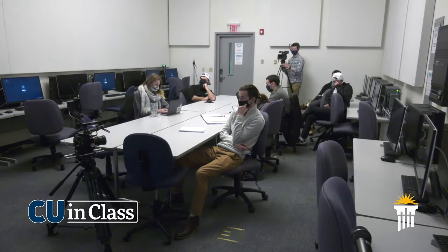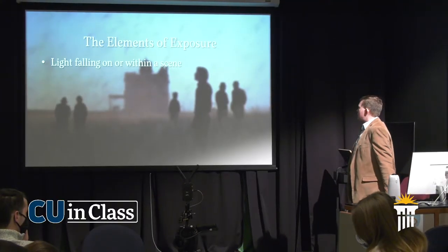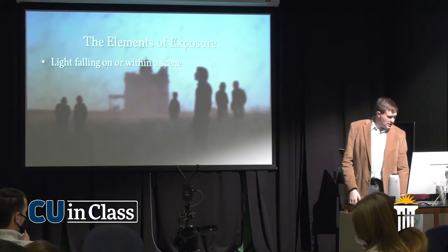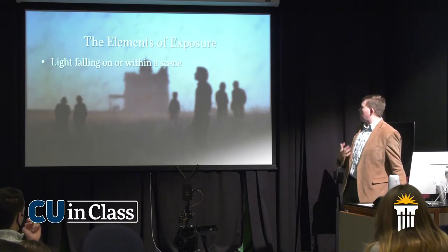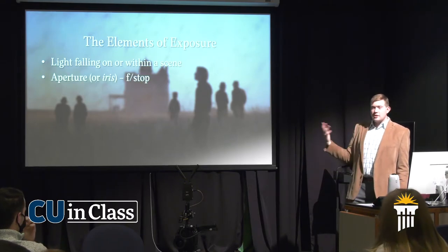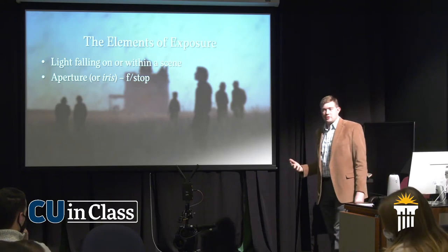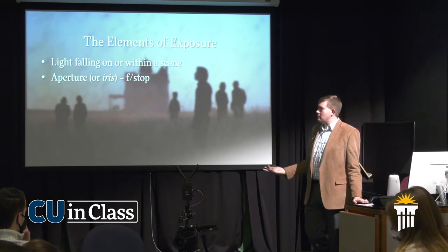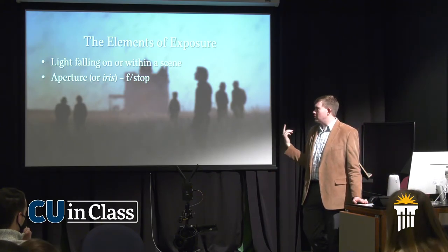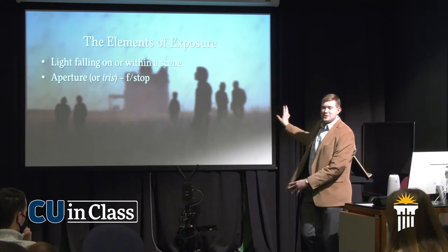Elements of exposure — first, light falling on or within a scene. If you're shooting in a dark room with no other lights, you're going to have to really work hard to compensate to make your image properly exposed, and there are ways to do that well — some are going to leave you with an unnatural artificial-looking image. Aperture — some cameras like broadcast cameras refer to this as iris. For now just call it aperture, and it's measured in what we call f-stops.